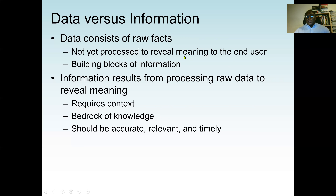Another example: a driving license. My last name alone doesn't mean much on its own. But when I combine last name, first name, address, and type of license together, that data gives me information. So data is raw facts, not yet processed, and that's the building block of information.